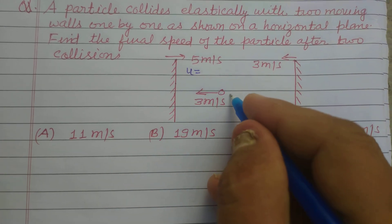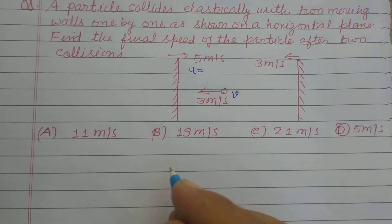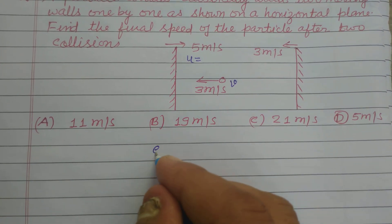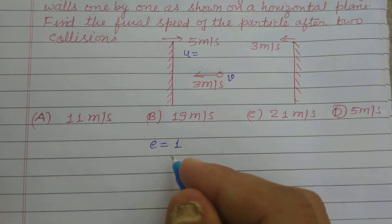...first wall, and v is the velocity of the particle. You know in elastic collisions, E, the coefficient of restitution, is 1.